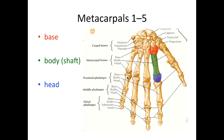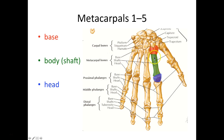Looking beyond the carpals, we have our metacarpals sitting within the palm or dorsum of the hand — you can feel them better on the dorsum. We have five metacarpal bones numbered one through five, and each metacarpal bone is broken down into a base, body, and head.